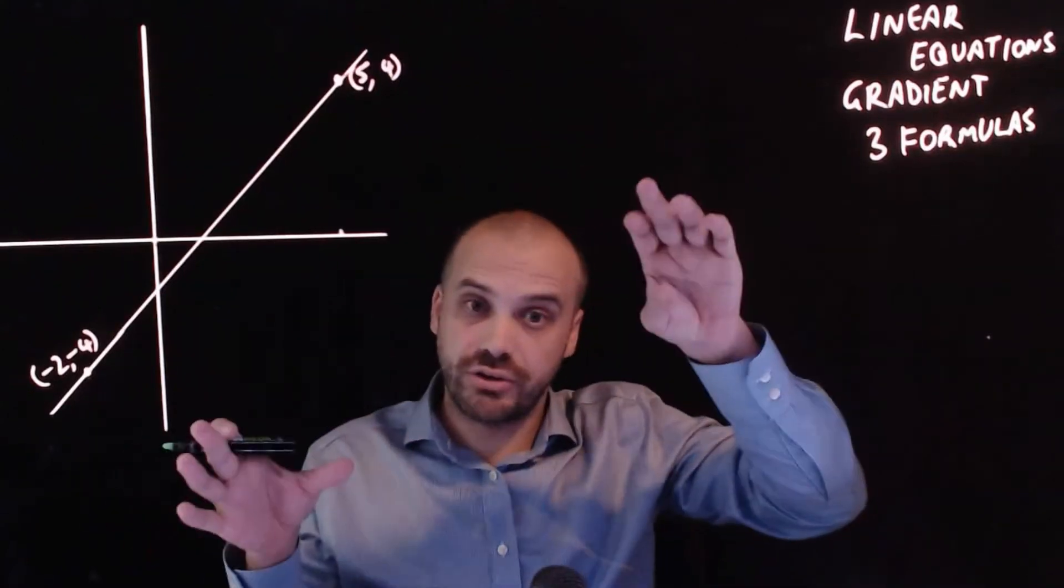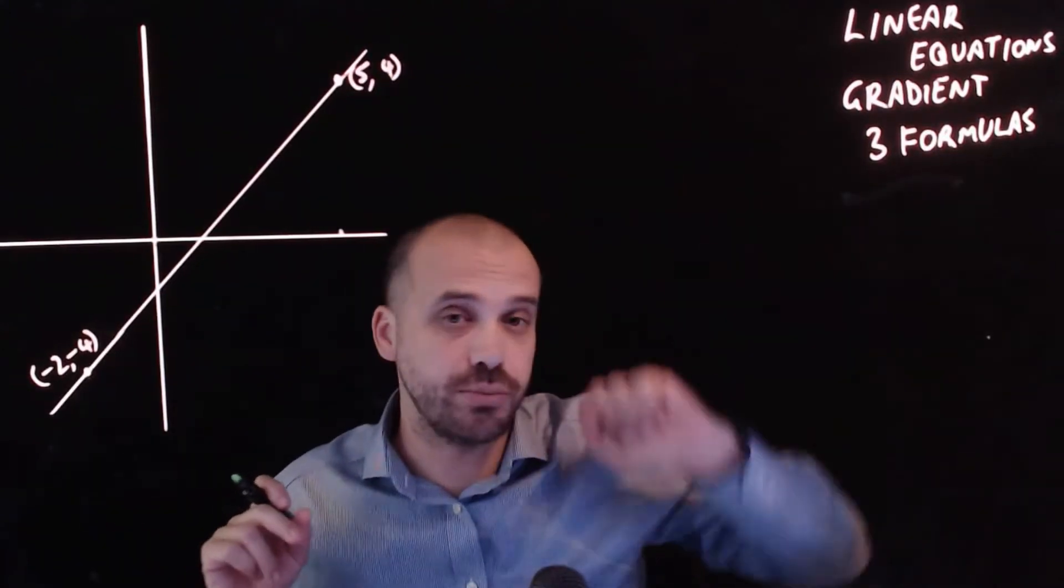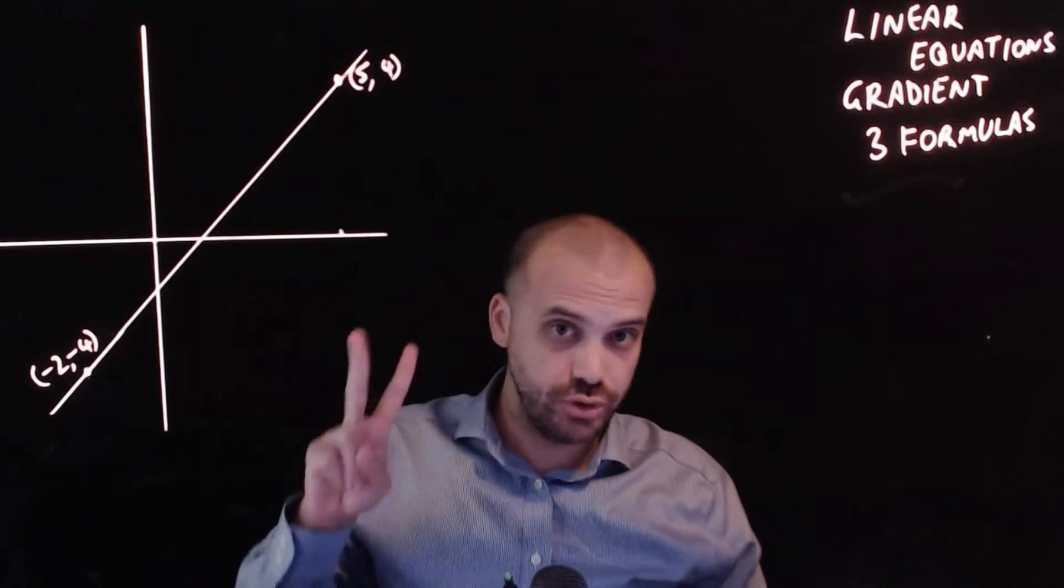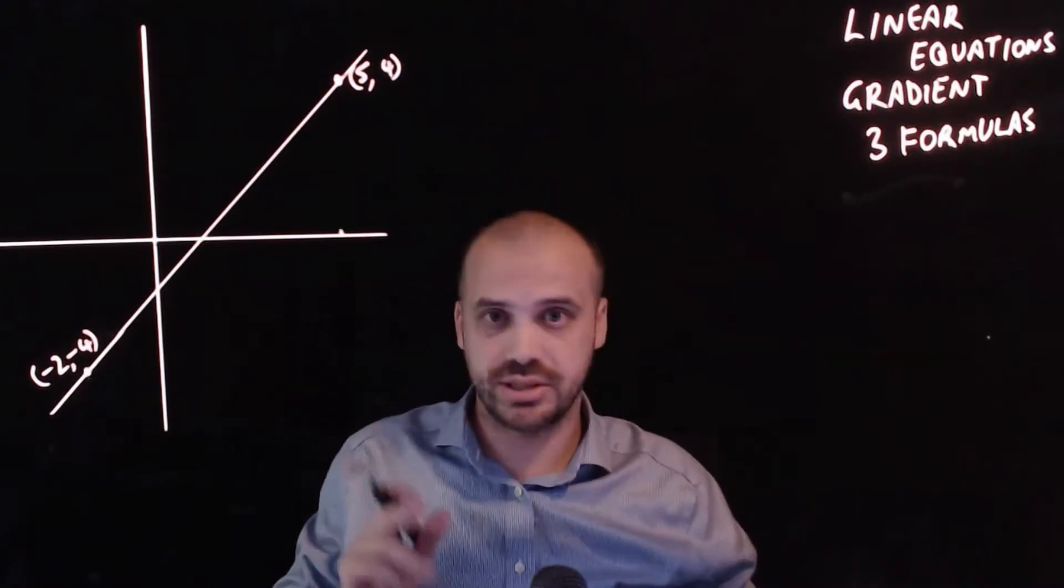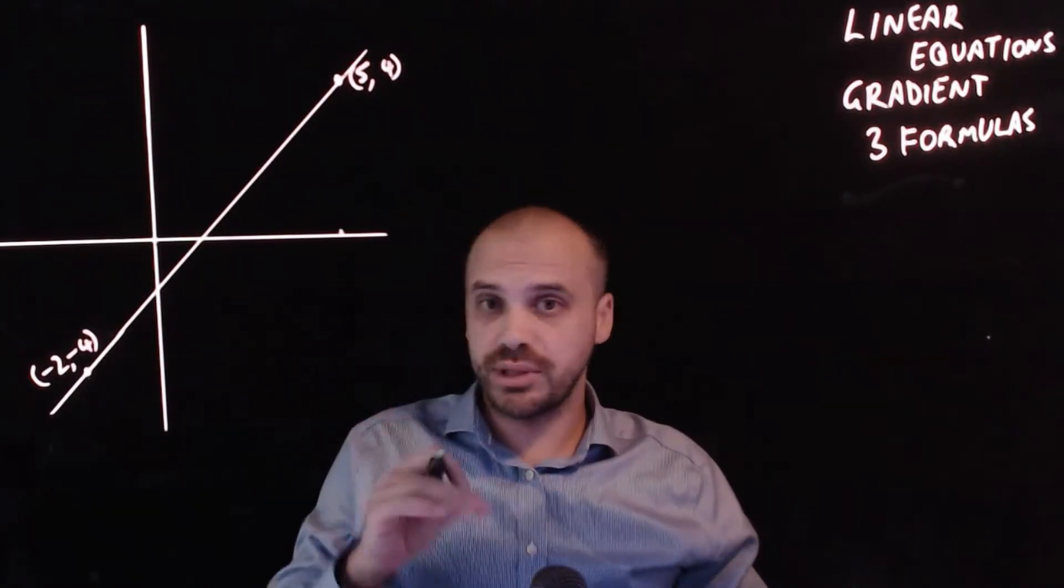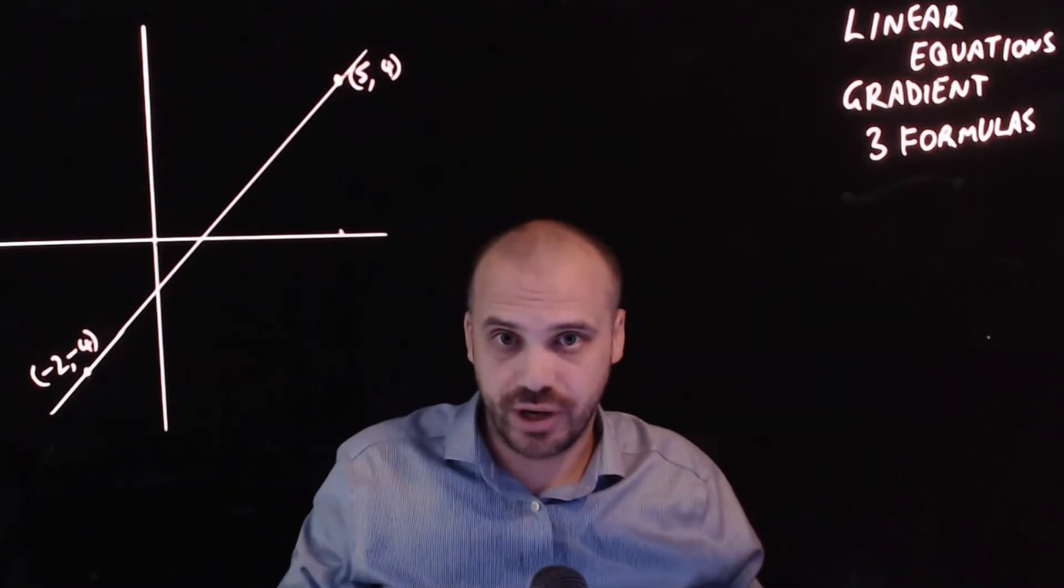We're going to be looking at the gradient of linear equations and we've been looking at three formulas for them. Now you should already know two formulas, I'm introducing a third one today. So the first formula should be very familiar, rise over run.